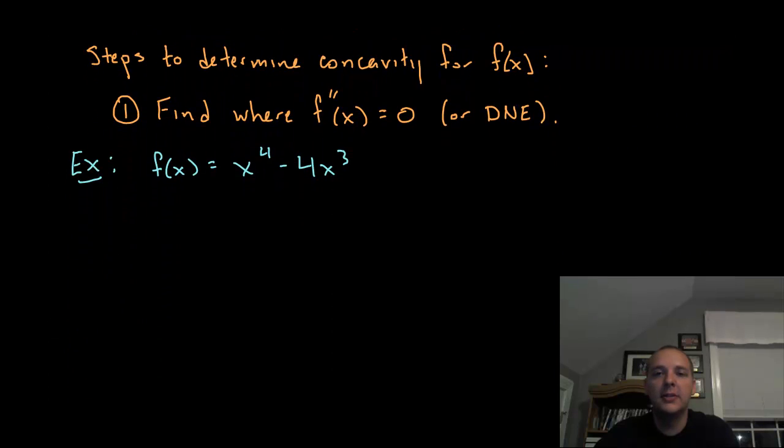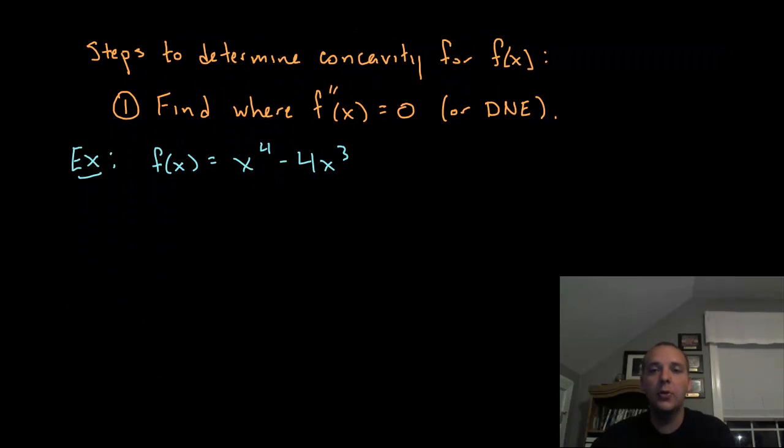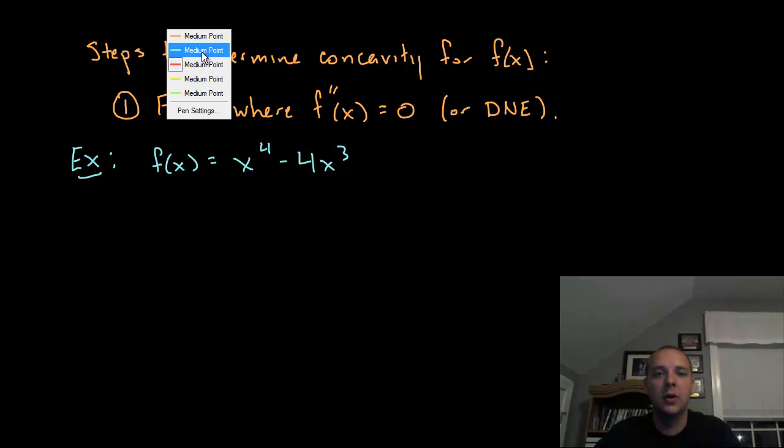Here are the steps you would actually go through to determine the concavity of a function. I'm going to do the steps but work an example along with it so you can follow along. The first step is to find where the second derivative is zero or does not exist. I'll explain why we're doing these things as we go along. For this function, let's find the second derivative.